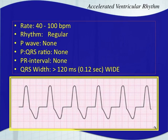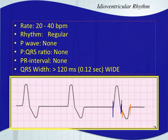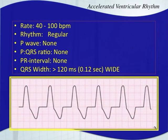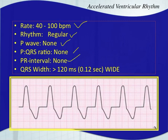Our next rhythm is accelerated ventricular rhythm. Just like we talked about junctional escape and then accelerated junctional, an accelerated ventricular rhythm is anything from 40 to 100 beats per minute. The idioventricular will be 20 to 40 beats per minute, and your accelerated ventricular is 40 to 100. Your rhythm should be very regular. Your P wave will be non-existent, so you don't have a P-QRS ratio or a PR interval. Your QRS width needs to be wide for it to be a ventricular rhythm.